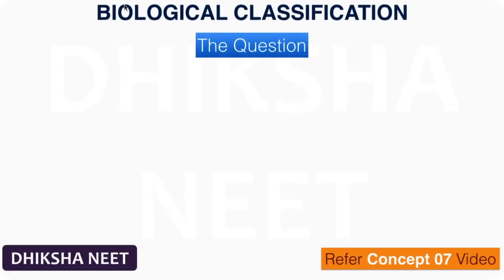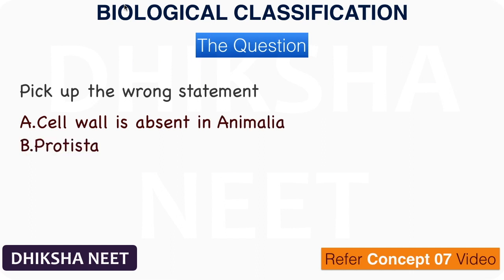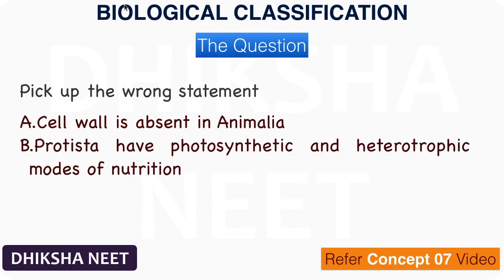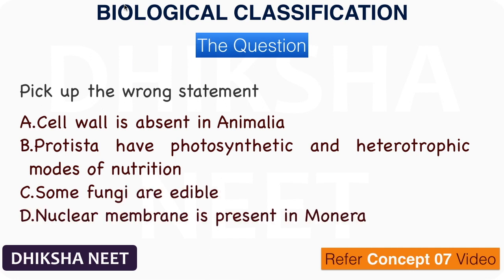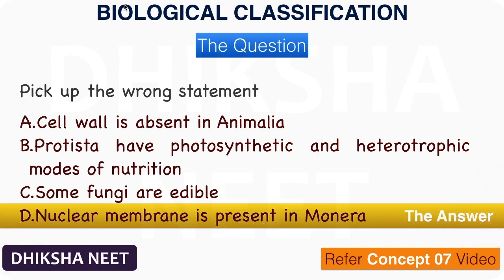The question: Pick up the wrong statement. A. Cell wall is absent in Animalia. B. Protista have photosynthetic and heterotrophic modes of nutrition. C. Some fungi are edible. D. Nuclear membrane is present in Monera. The answer is option D. Nuclear membrane is present in Monera is the wrong statement.